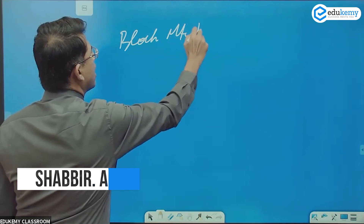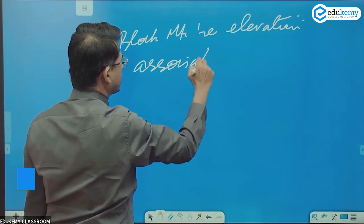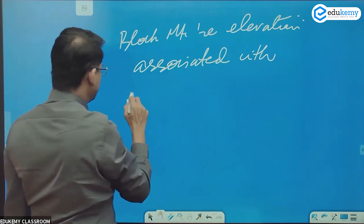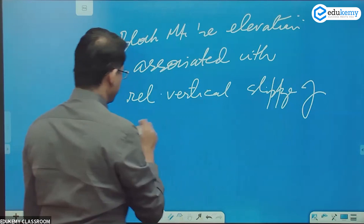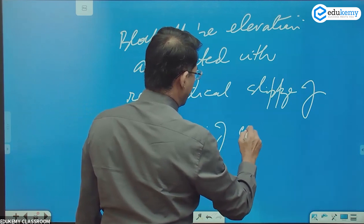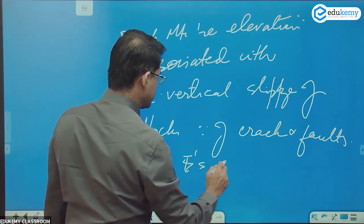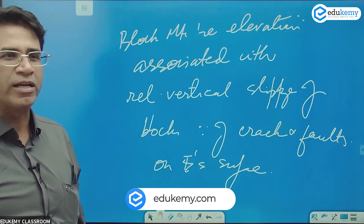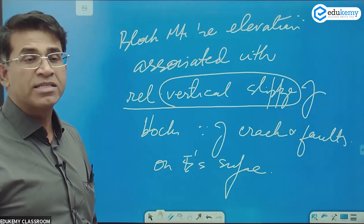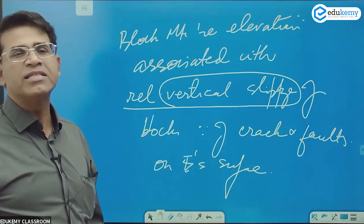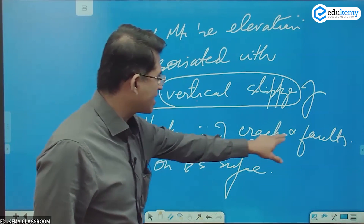Block mountains are elevations associated with relative vertical slippage of blocks because of cracks and faults on Earth's surface. When something slips and becomes higher, that elevation is called a block mountain.